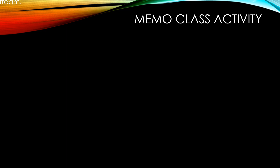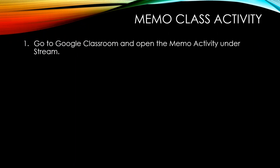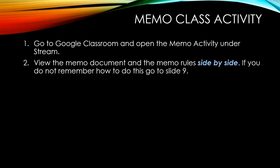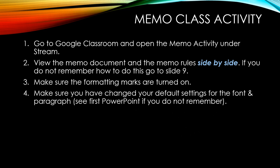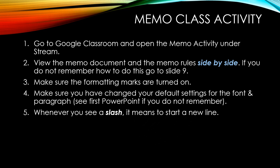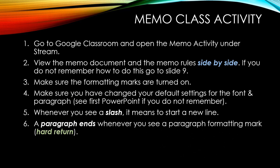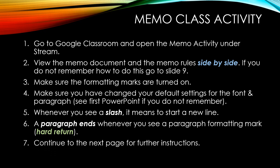It is now time to start your memo class activity. Go to Google Classroom and look for the memo activity that is given to you underneath the stream tab. View the memo document activity and the memo rules side by side. If you do not remember how to do this, go to slide 9. Make sure the formatting marks are turned on. Make sure you have changed your default settings for the font and paragraph. Whenever you see a slash, it means to start a new line. A paragraph ends when you see a paragraph formatting mark or what we call a hard return. Continue to the next page for further instructions.